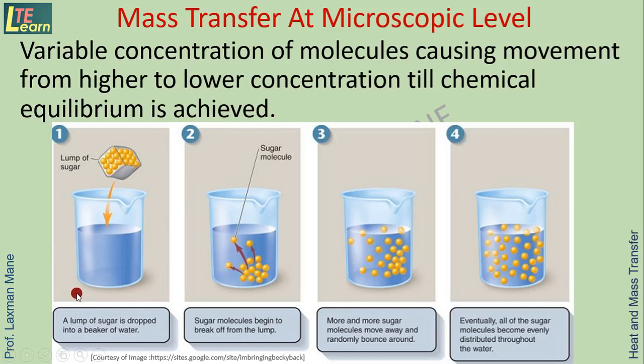You can see here, this is a lump of sugar. It is dropped into a beaker of water. Here, sugar molecules begin to break up from the lump. More and more sugar molecules move away and randomly bounce around. When the chemical equilibrium condition is reached, all of the sugar molecules become evenly distributed throughout the water.